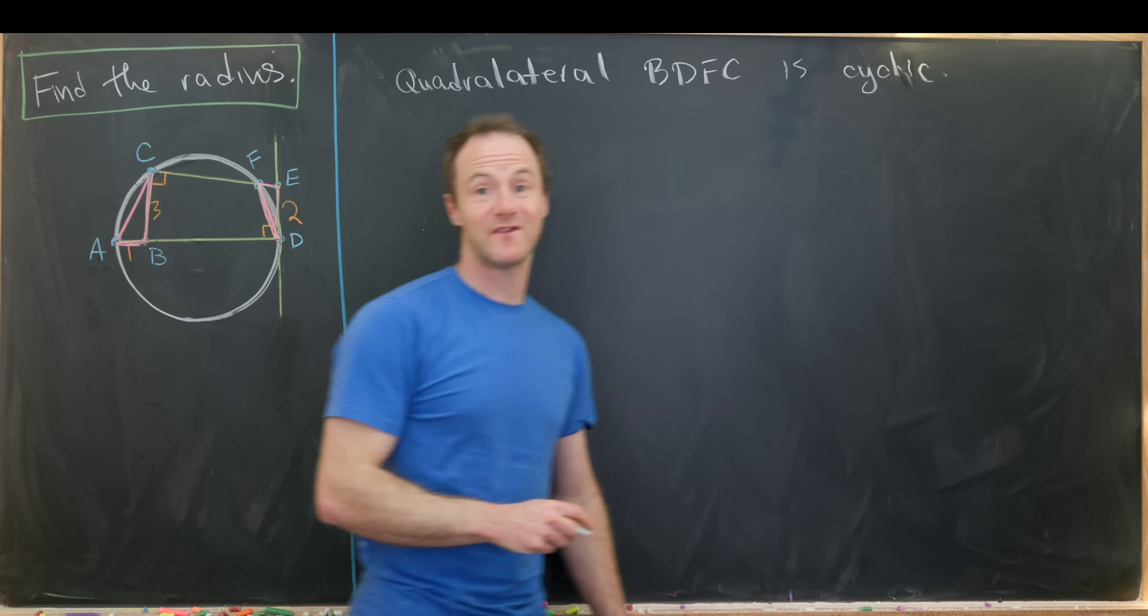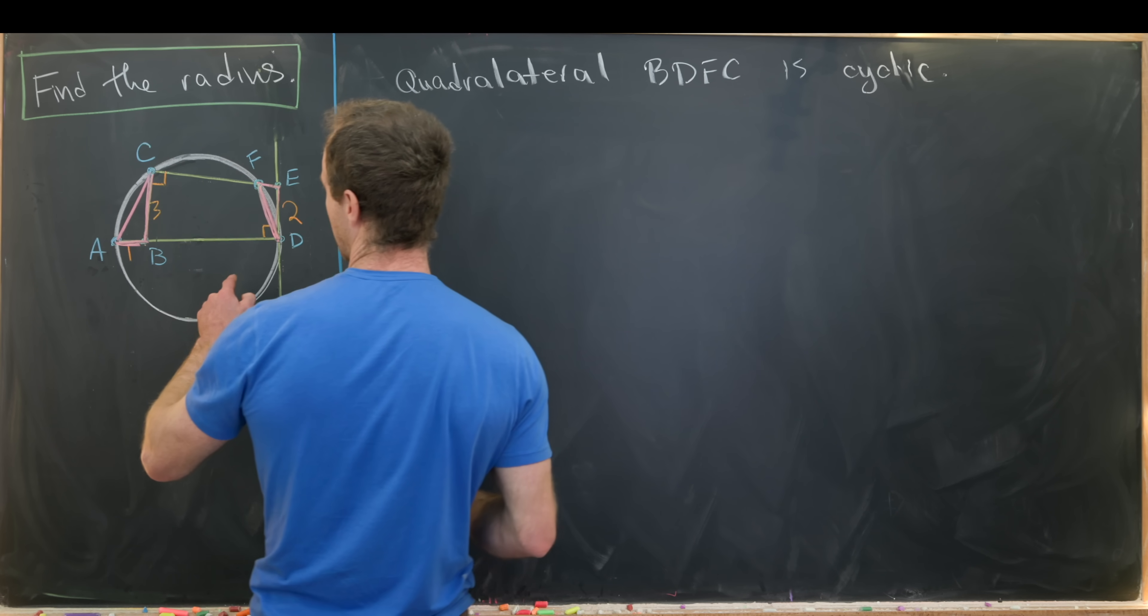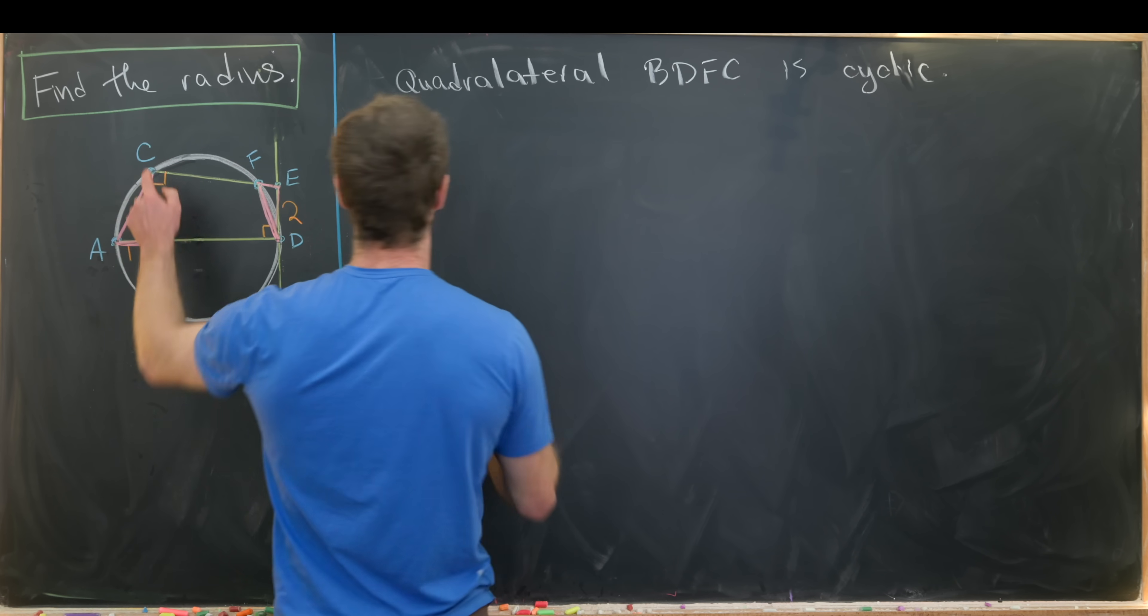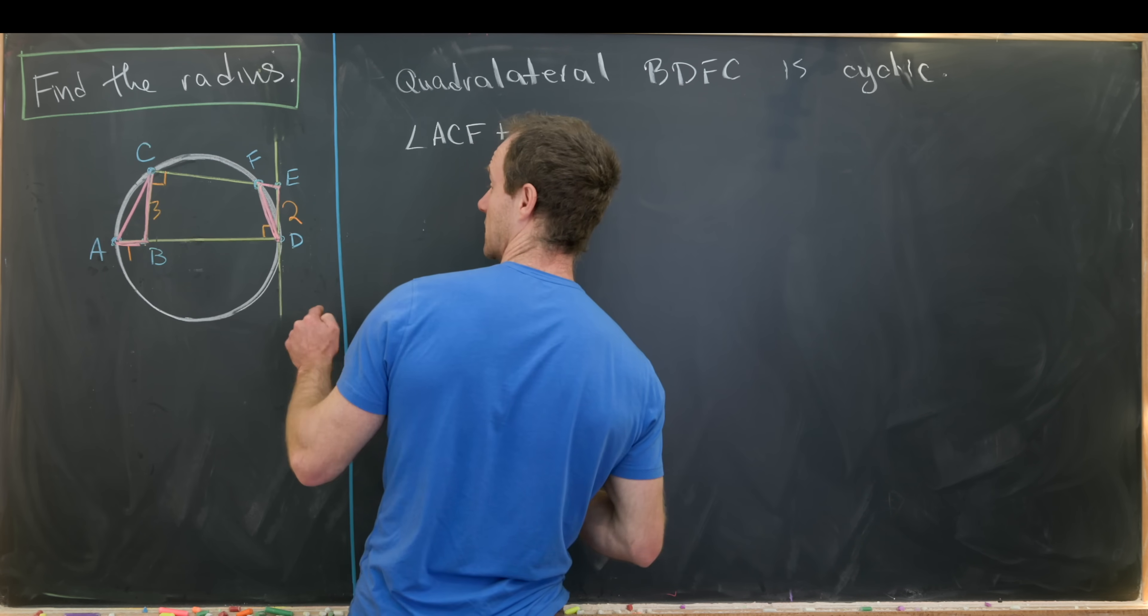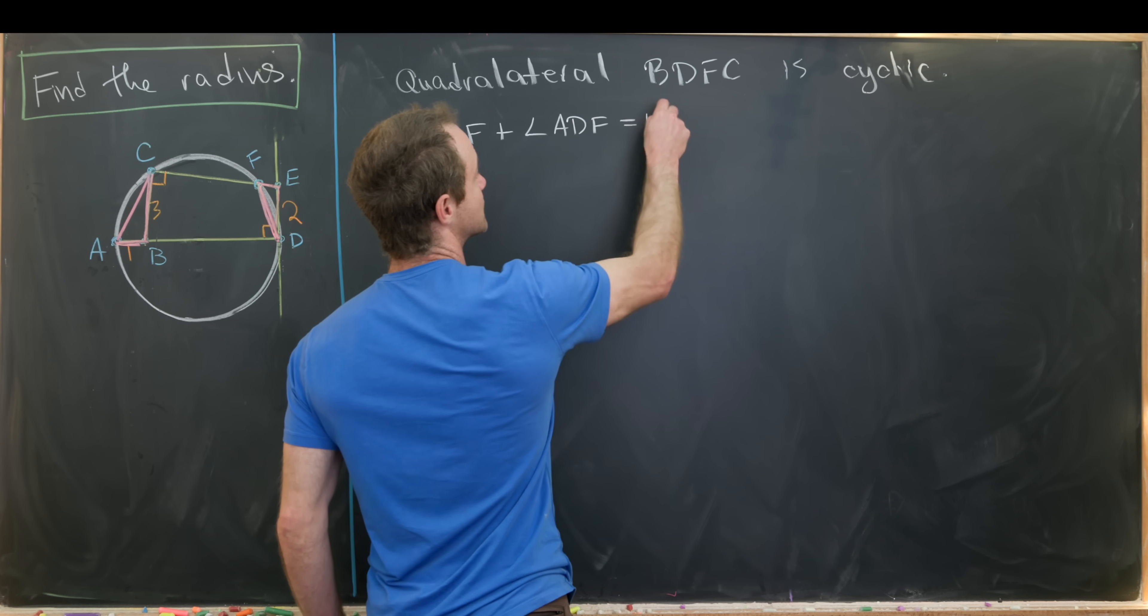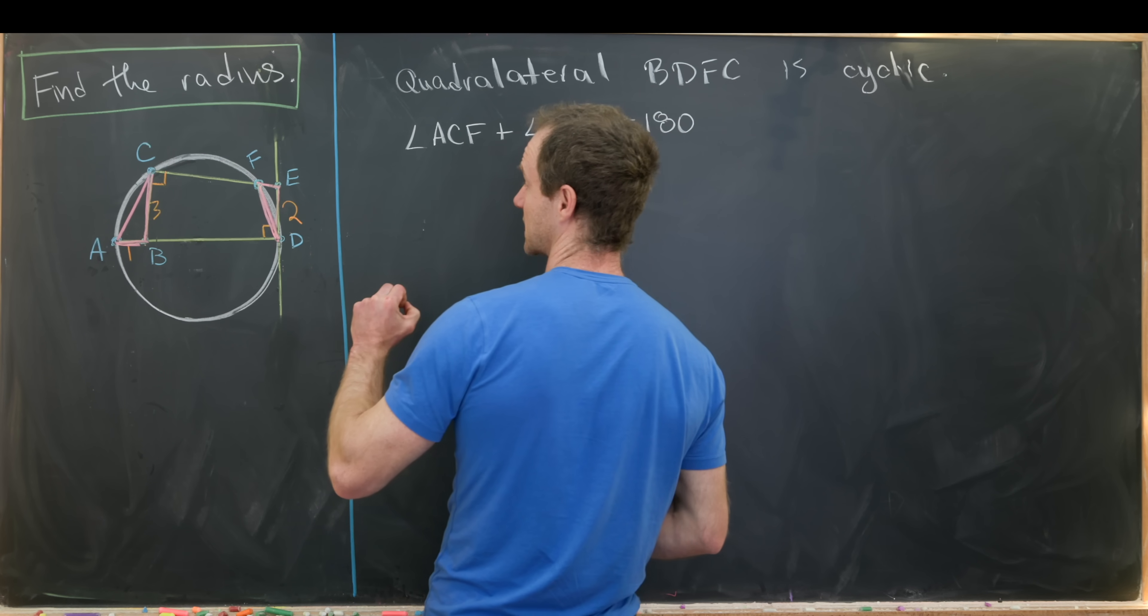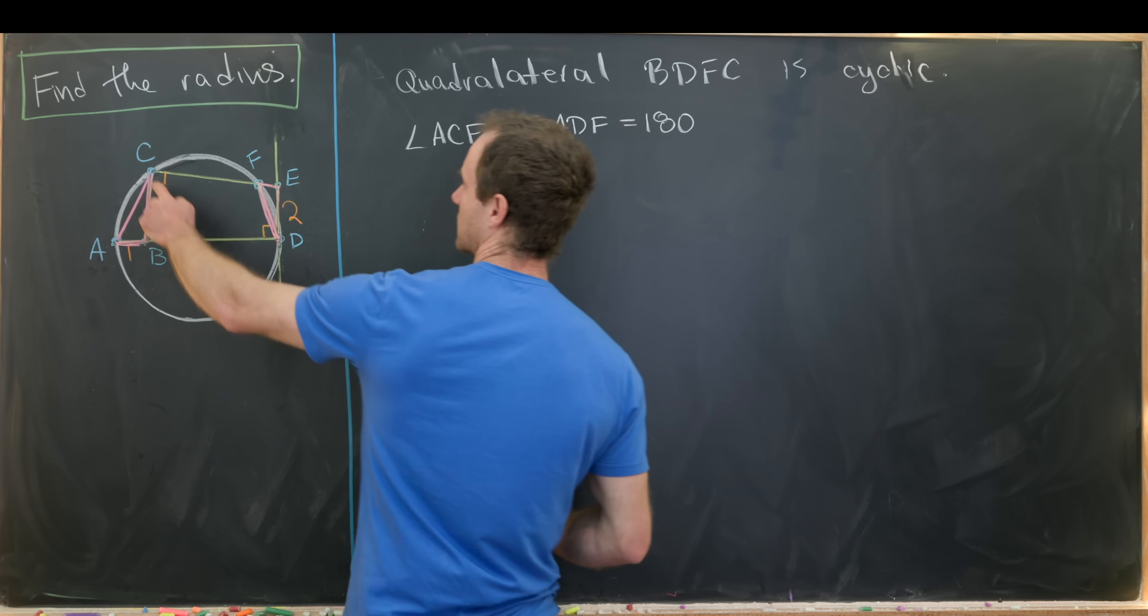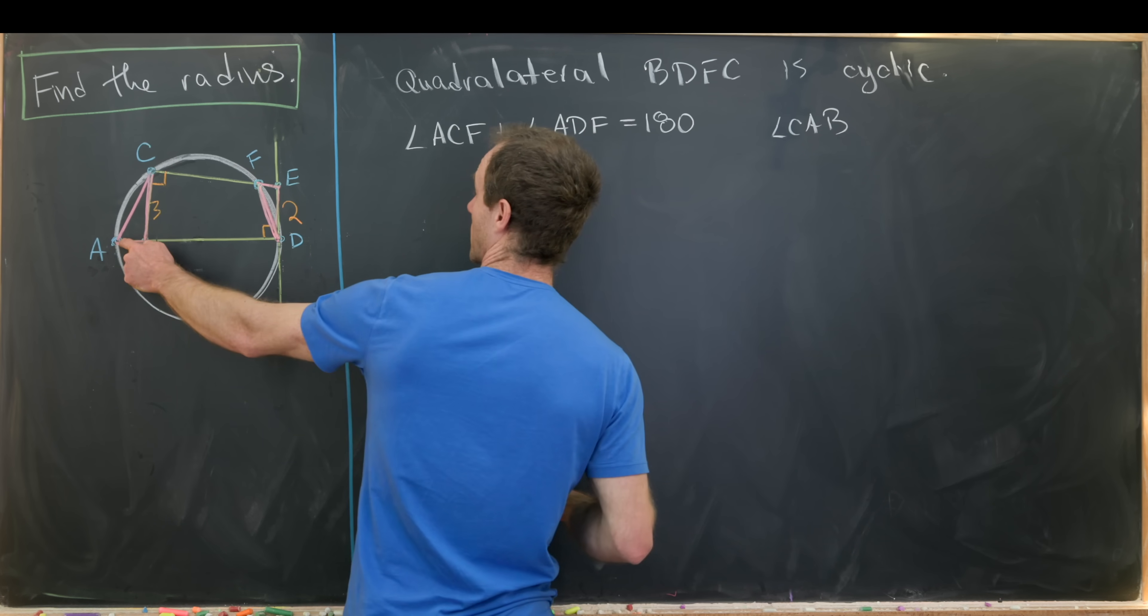And then there's a really important fact about cyclic quadrilaterals, and that is opposite angles add up to 180 degrees. So let's use that. So that tells us that angle ACF plus the opposite angle, which is ADF, equals 180.